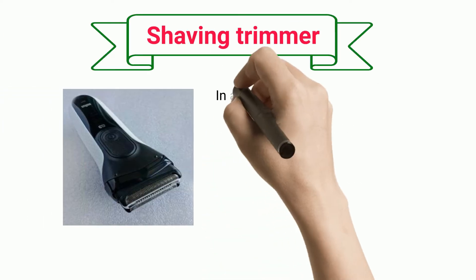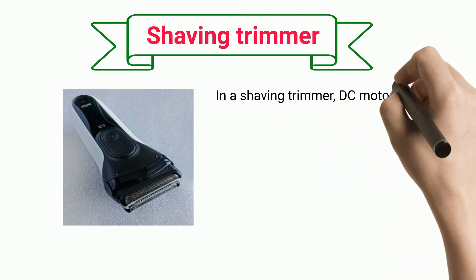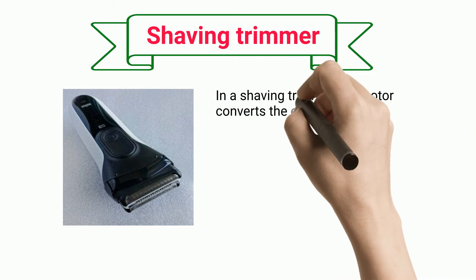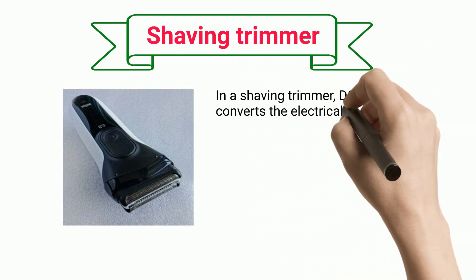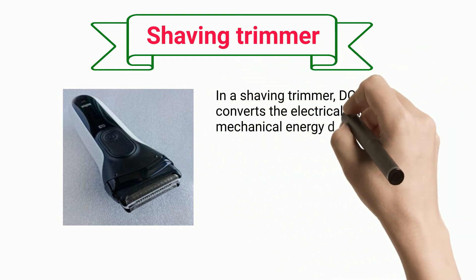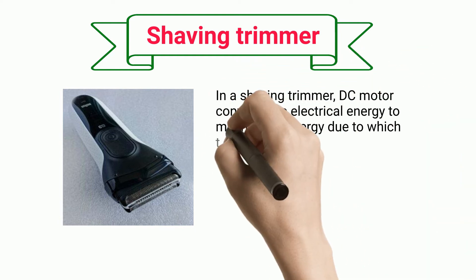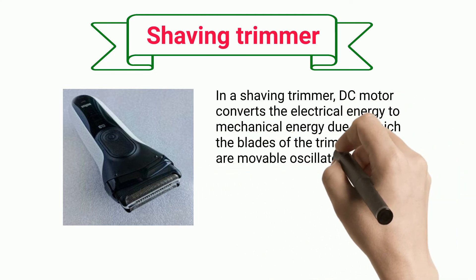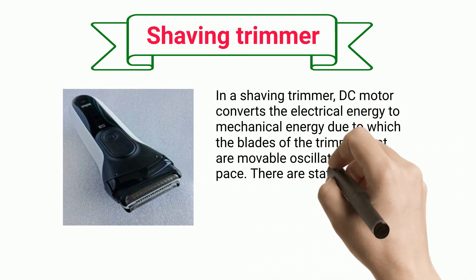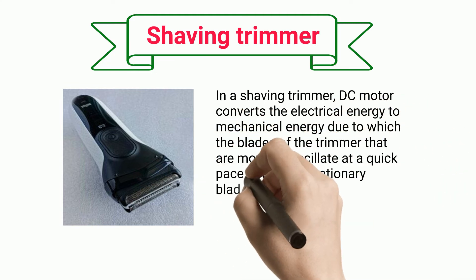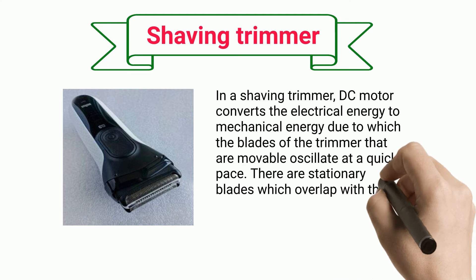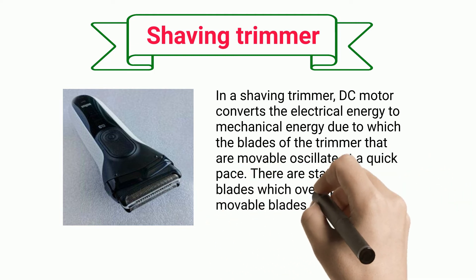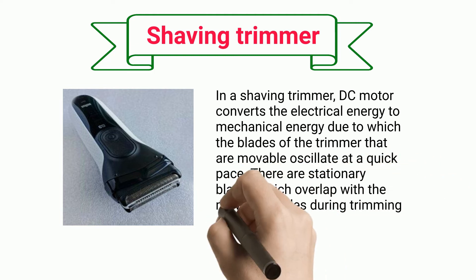Shaving Trimmer. In a shaving trimmer, a DC motor converts electrical energy to mechanical energy, due to which the blades of the trimmer that are movable oscillate at a quick pace. There are stationary blades which overlap with the movable blades during the trimming of hair.